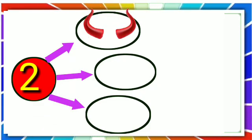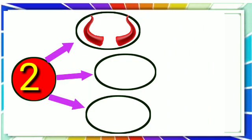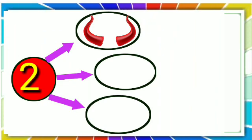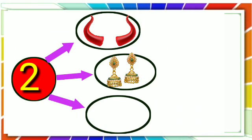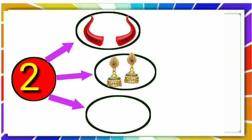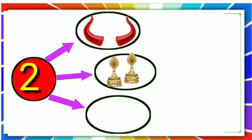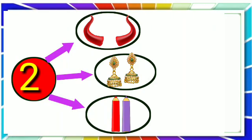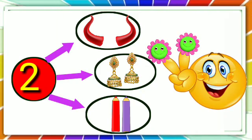Look at this picture. These are two horns. Next picture. Remember, these are two earrings. One and one make two earrings. And these are two pencils. Remember, one and one make two.